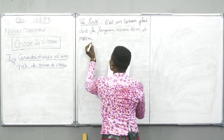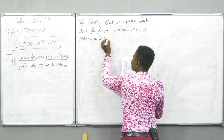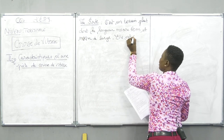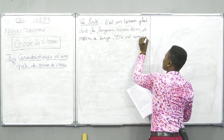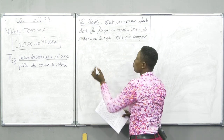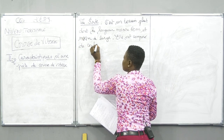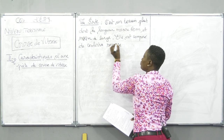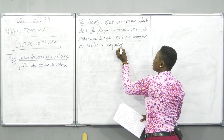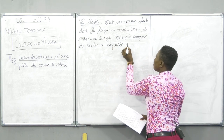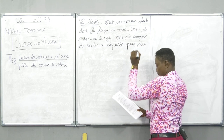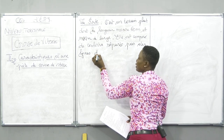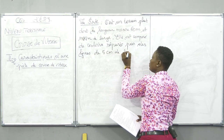1,22 m de large. Elle est composée de couloirs séparés par des lignes. Des couloirs séparés par des lignes de 5 cm de large.